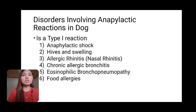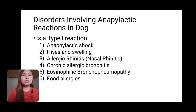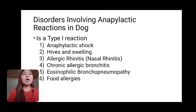Disorders involving anaphylactic reactions in dogs. This is a type 1 reaction in which the animal has been previously exposed to an antigen and produces antibodies. If this antigen appears in the blood, the reaction can be either body-wide such as anaphylactic shock, or localized such as itchy patches on the skin. If the antigen enters through the skin, a localized reaction is more common. There are six kinds of anaphylactic reactions in dogs: anaphylactic shock, hives and swelling, allergic rhinitis, nasal rhinitis, chronic allergic bronchitis, eosinophilic bronchopneumopathy, and food allergies.